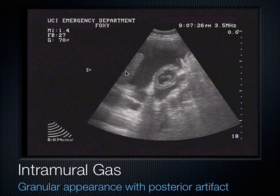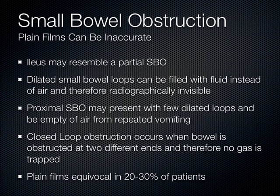Small bowel obstructions — you typically think to get an X-ray and you'll see it. Unfortunately, an X-ray needs to see an air-fluid level. If the patient doesn't have air and fluid together in the intestines, you will miss this diagnosis on X-ray. That's why X-rays have terrible test characteristics to pick up a small bowel obstruction — only in the very severe cases do we usually see it.